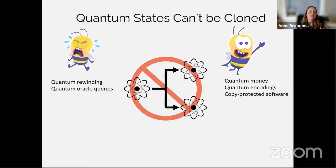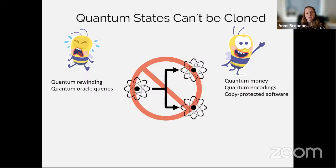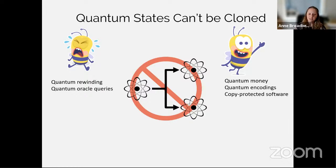We can do things like quantum money, quantum encodings, quantum copy-protected software — these are all topics we'll be covering today. For pessimists, the no-cloning theorem was historically brought up as a reason why full-scale quantum computers could never be built, because copying was thought to be required for error-correcting codes. But that turned out not to be true, thanks to the ingenuity of quantum information scientists who found quantum error-correcting codes that don't require copying.